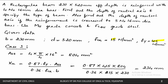First we calculate the area of reinforcement. The area of one bar is π/4 × d² = π/4 × 16² . We have 4 bars, so we multiply by 4. Therefore the total area of steel AST = 804 mm².